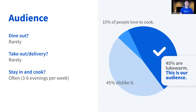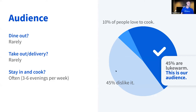I was thinking about the audience for my API. Each API should have some kind of audience — the end user who's going to benefit from it. In terms of dining out, I'm thinking about someone who dines out rarely, stays in and cooks often — maybe three to six evenings per week. I found a survey that said 45% of people dislike cooking, 10% love to cook, and 45% are lukewarm. I'd say that matches me — I'm kind of our target audience: people that are lukewarm about cooking.